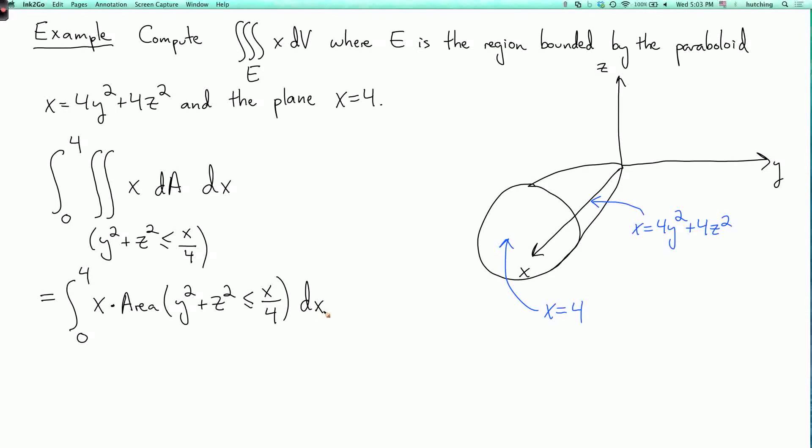So what's the area of this region? Well, what is this region? It's a disk in the y-z plane. So we have the y-z plane over here, and here's the circle where y squared plus z squared equals x over 4. So that's the boundary of this disk. And what's the radius of this disk? Well, y squared plus z squared is radius squared. So the radius is the square root of x over 4.